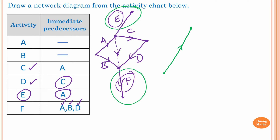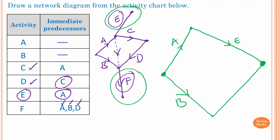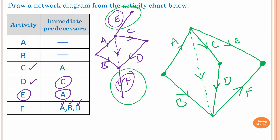So we redraw: Activity A, Activity B, and I place E and F first to make things easier — Activity E and Activity F. Then Activity C from A, and Activity D joining with Activity B. We need to connect Activity A to both B and D, so this is a Dummy Activity. You can see that to do Activity F, we need to complete Activities D, B, and the Dummy from A first. This is the network diagram for this activity chart.